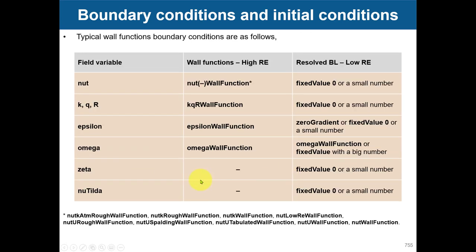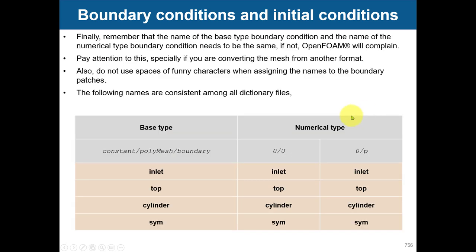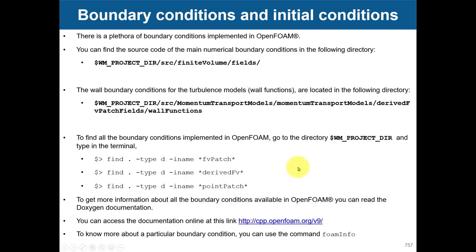Regarding wall functions, these are the combinations — don't worry, we will address this in the advanced models. Also remember: the name of the patches needs to be the same in constant/polyMesh/boundary and in the zero folder — for U, P, k, omega, T, rho, alpha. You always use the same name all over the boundary condition files.